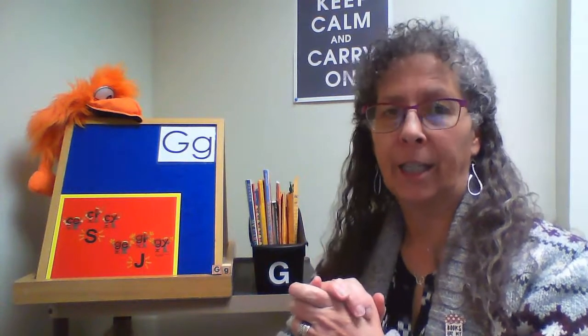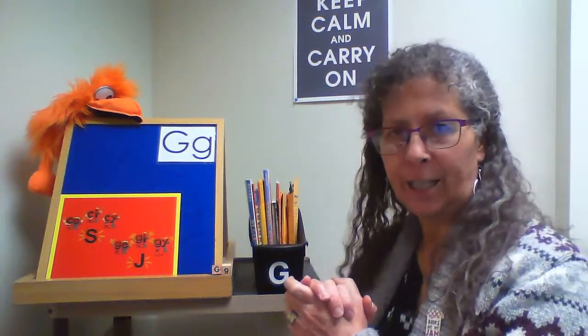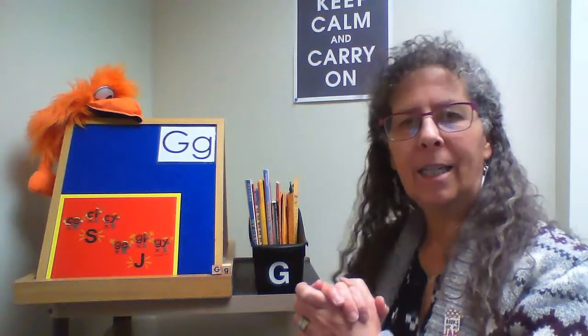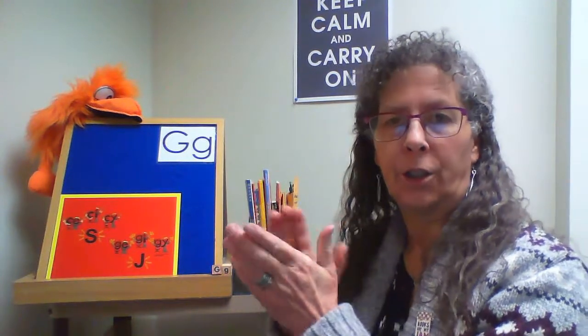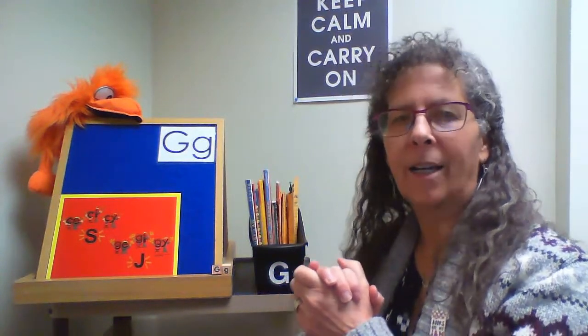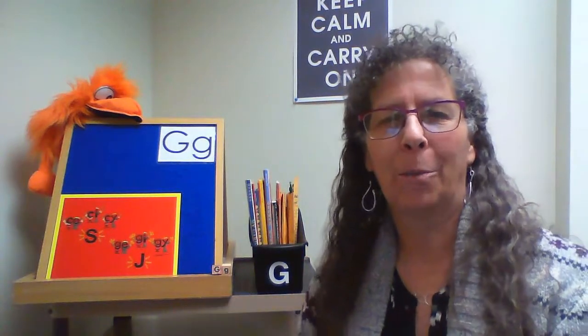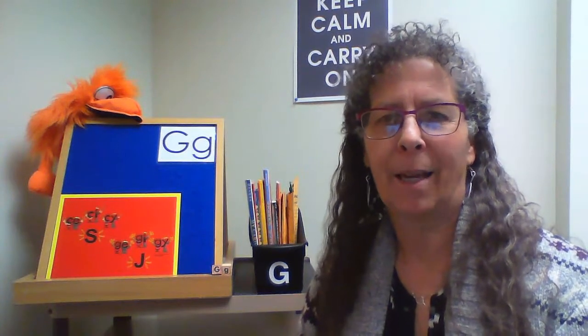You sing: 'G-E, G-I, G-Y, G-G, G-E...' Each time they say G-E, G-I, or G-Y, they kick one foot out like the Mexican Hat Dance. And if you read 'Bark George,' you can explain to them why the G is making a soft sound instead of the hard sound of G.